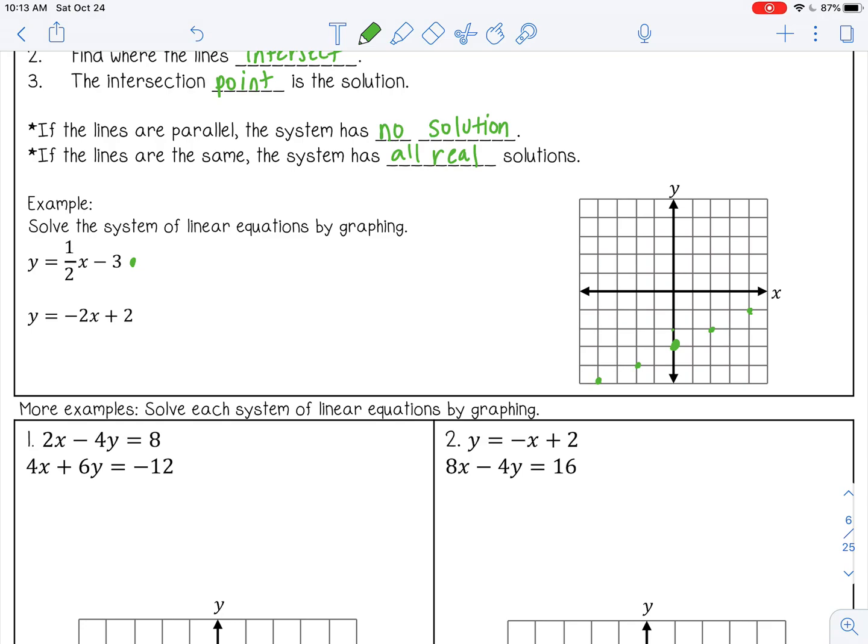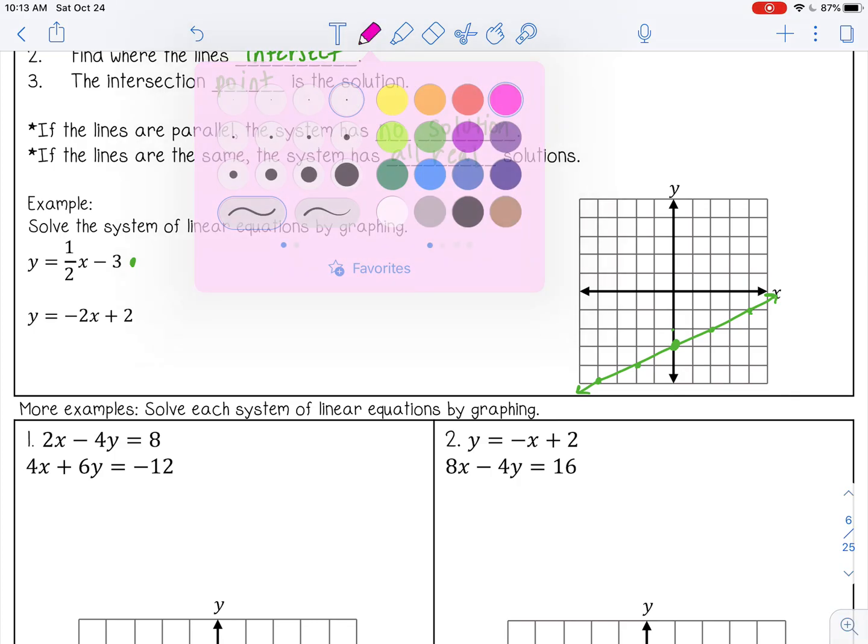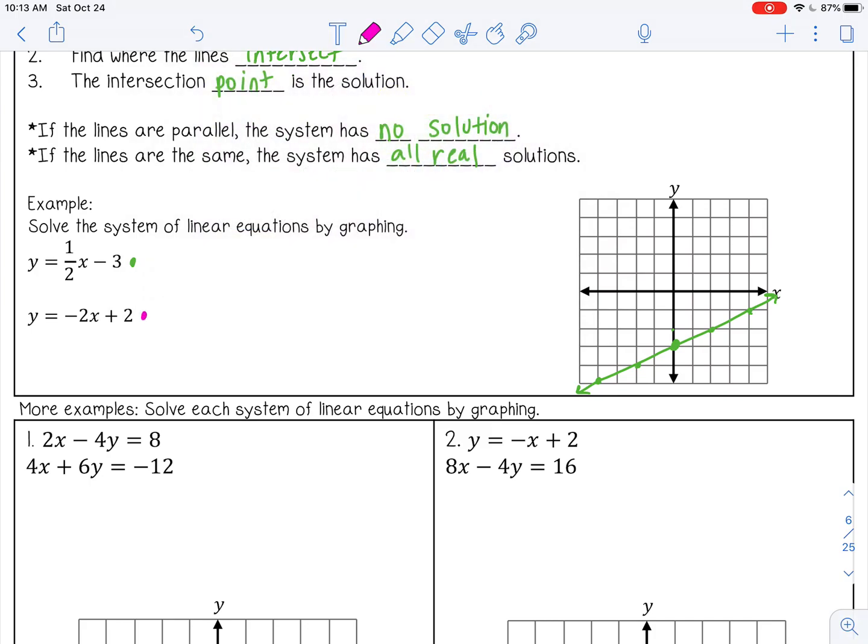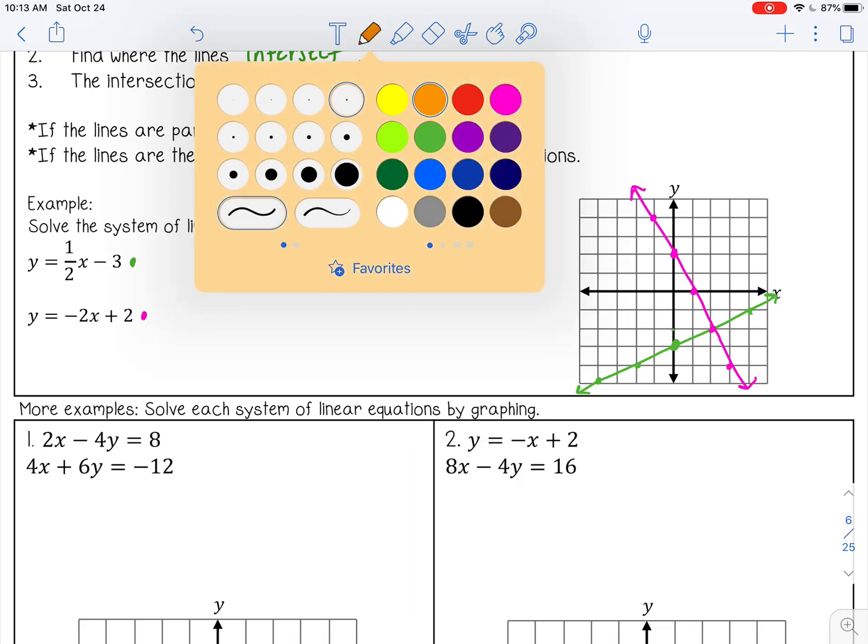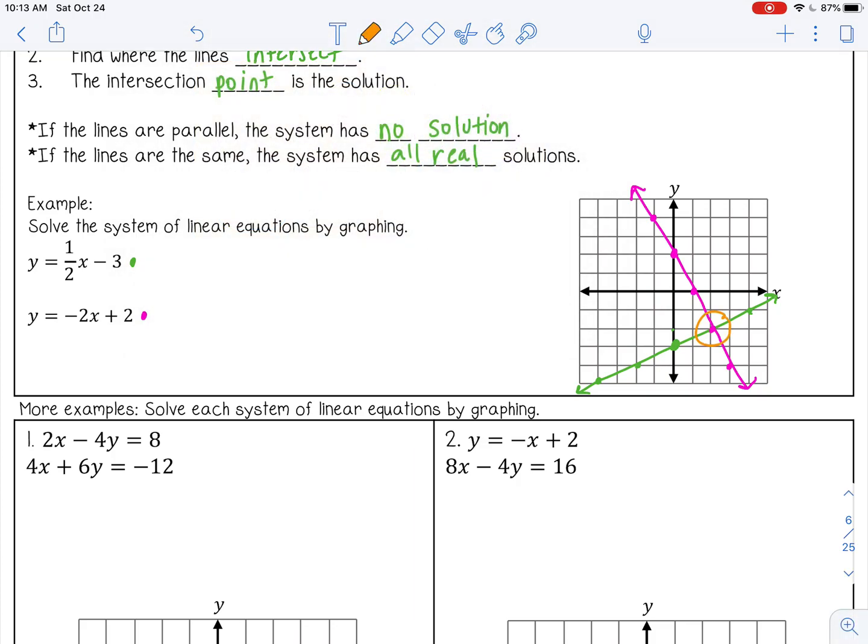So this is my first line. If you have a ruler or a straight edge, that's going to help you because you want to make sure these are perfectly straight so you get that intersection point correct. I'm going to use pink for the second one. It has a y-intercept of two and a slope of negative two, so I'm going to rise two, run one, and then in the opposite direction.